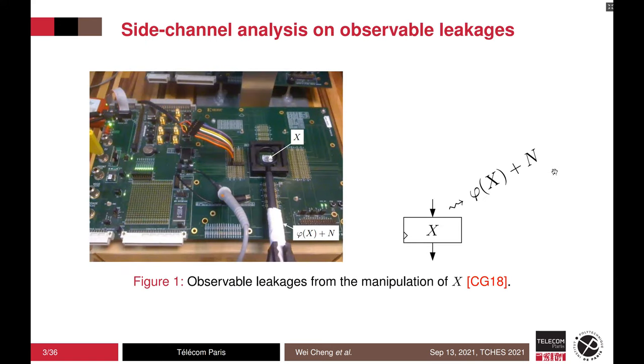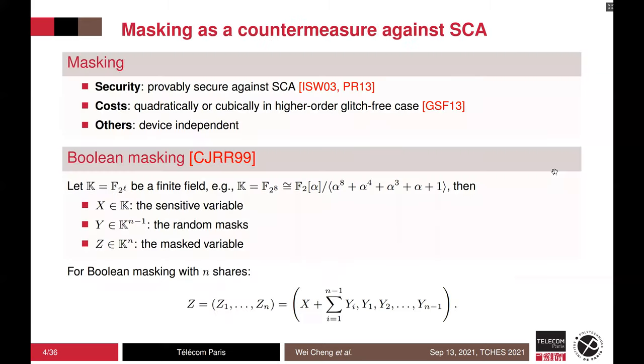In side-channel analysis, a sensitive variable X is leaking in certain forms. The leakage can be viewed as a combination of some functions on X and a noise N. A commonly used setting is assuming measurement noise is the additive white Gaussian noise. To protect cryptographic implementation, one of the most established countermeasures is masking. In particular, the masking provides provable security, and it is in the algorithmic level. It costs increasing critically with the security order.